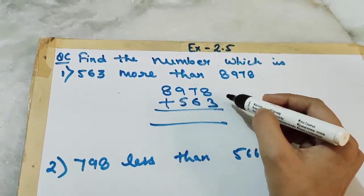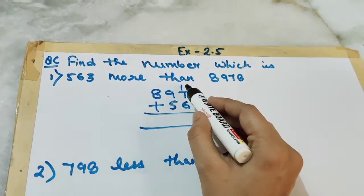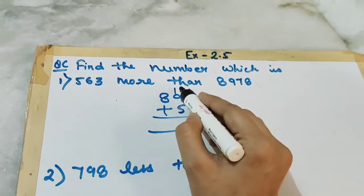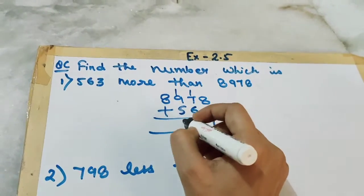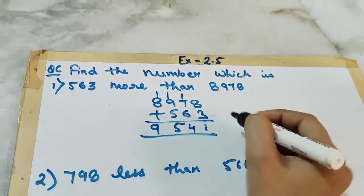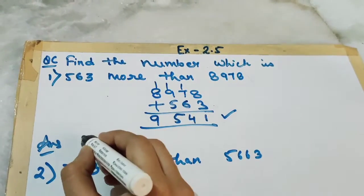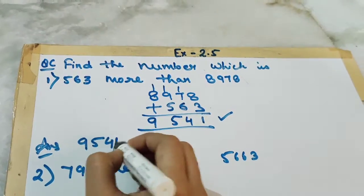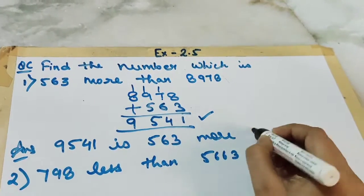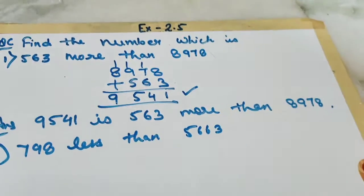8 plus 3 is 11, carry 1. 7 plus 1 is 8, plus 6 is 14, carry 1. 9 plus 1 is 10, plus 5 is 15. Very good students. 8 plus 1 is 9. So we got the answer: 9,541 is 563 more than 8,978.